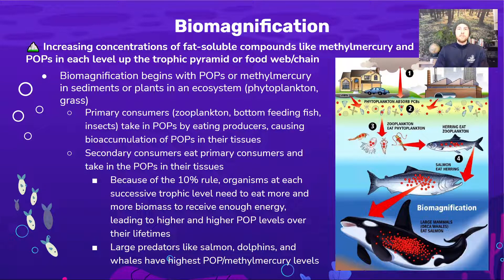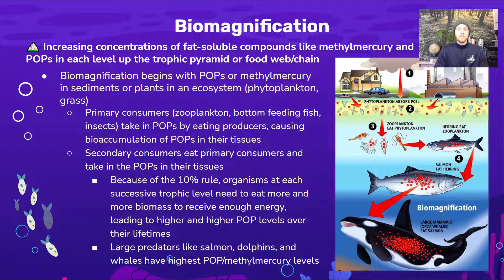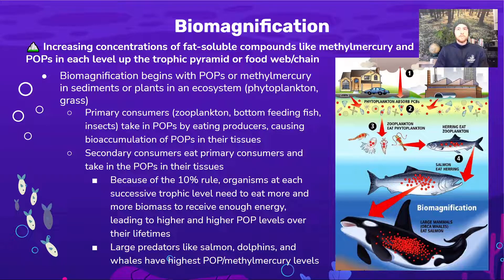Bioaccumulation happens to a single organism — it's the buildup of POPs or methylmercury in fat tissues over time. Biomagnification occurs because of the 10% rule: organisms at higher trophic levels have to eat so much more biomass that they're exposed to the levels accumulated in the organisms beneath them. Individual organisms bioaccumulate pollutants over their lifetime, storing them in fat tissues, but organisms at higher trophic levels reach higher and higher levels because of biomagnification.